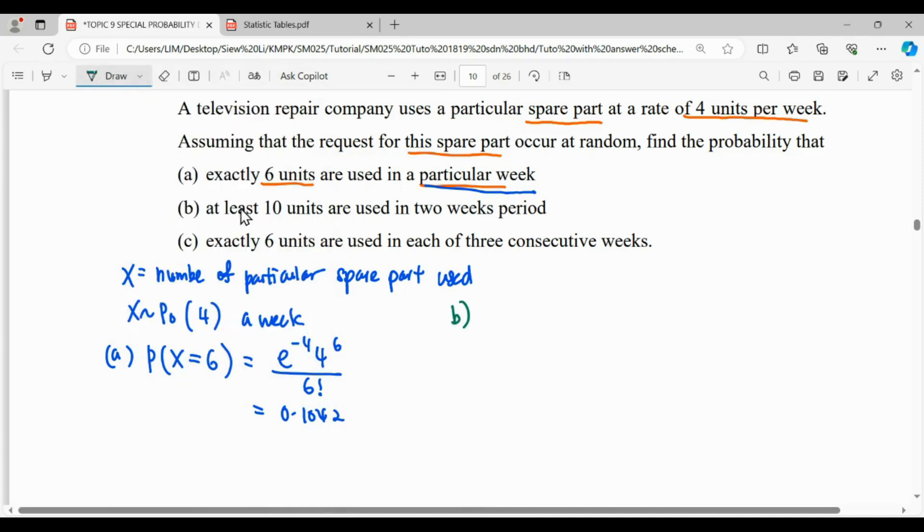For question B, at least 10 units in 2 weeks. So for 1 week, we have lambda is 4. When we come to 2 weeks, the lambda will be 8. So we rewrite our distribution as Poisson with lambda 8. This is for the time frame of 2 weeks.